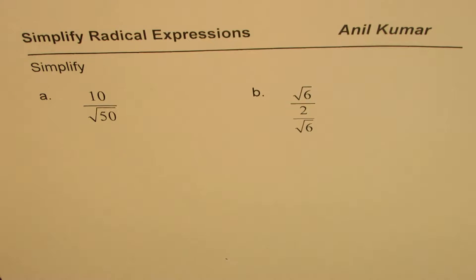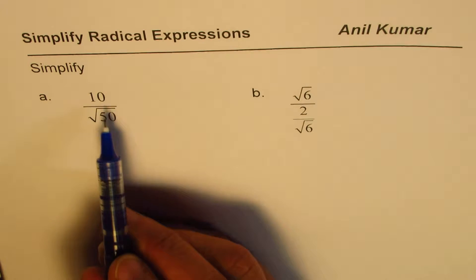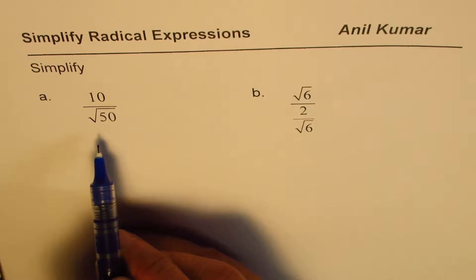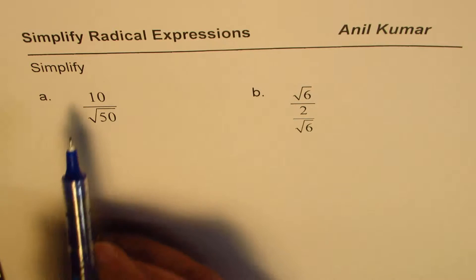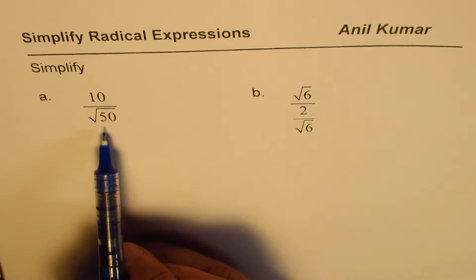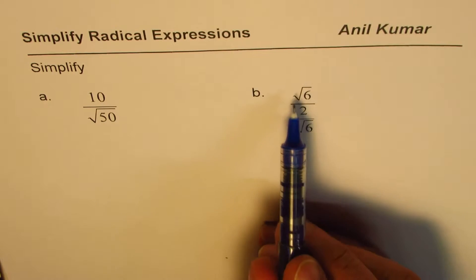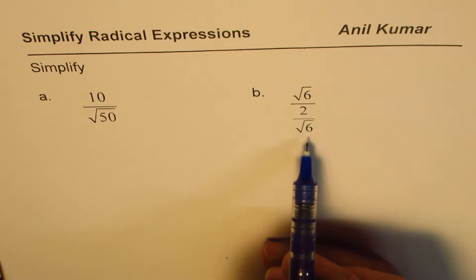I'm Anil Kumar and in this video we'll learn how to simplify radical expressions. I have taken in the form of fractions two examples to understand the concepts. The first one is 10 divided by square root of 50, and then we have square root of 6 divided by 2 over square root of 6.